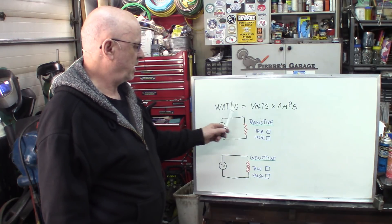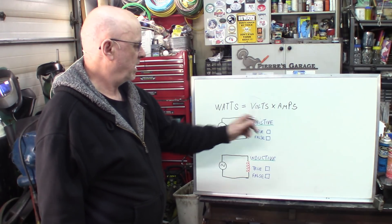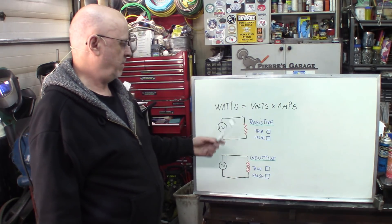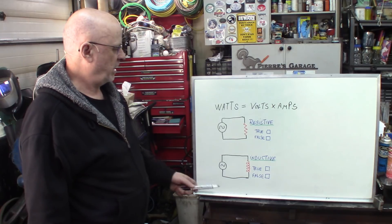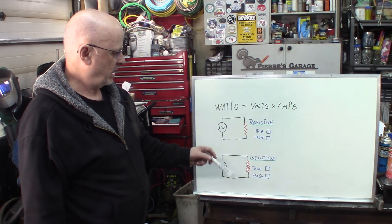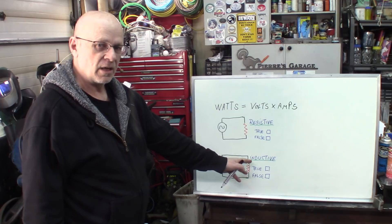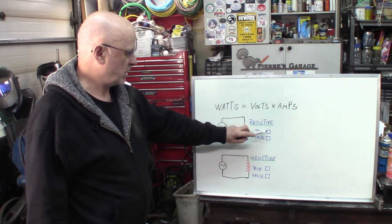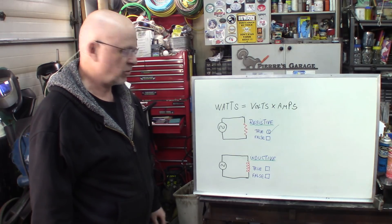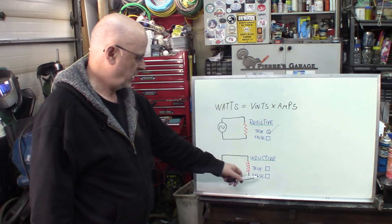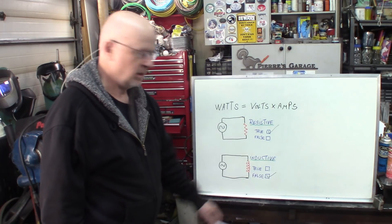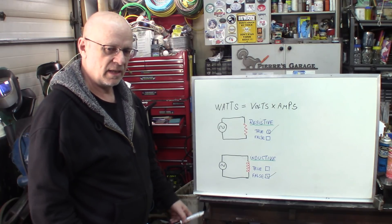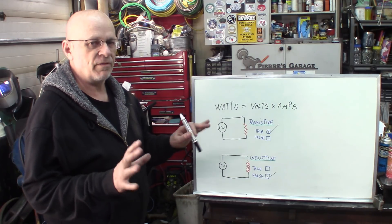The formula that's generally agreed upon is watts equals volts multiplied by amps. For resistive loads, what would you think the answer will be? And for inductive loads, what would you think the answer is? True or false? So for resistive load, it's true. And inductive load, mostly false. Let's go to the next board and I'll explain briefly how and why.